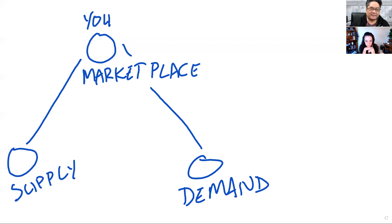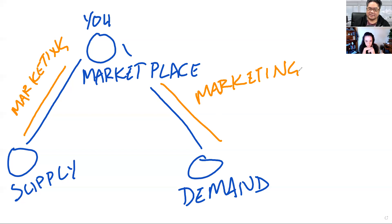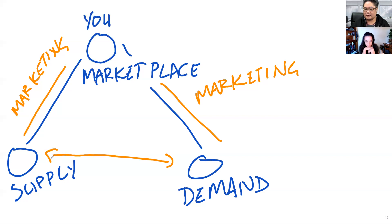What you're doing is trying to figure out this marketing right here — this requires marketing, and this requires marketing, or customer acquisition. The problem is where most marketplace founders fall down, because what the supply and demand really want is to connect directly with each other, not through you. So it becomes: how do you market them to each other?